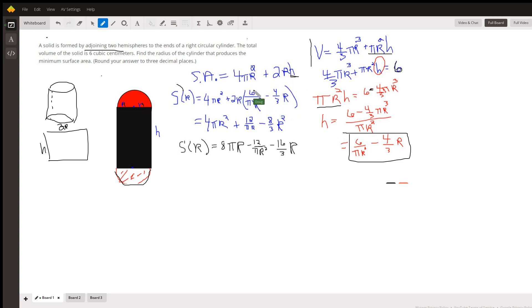We're going to take this expression and substitute it in for this h. This is what we get. If you distribute the 2r, you get 12 over πr and negative 8/3r².